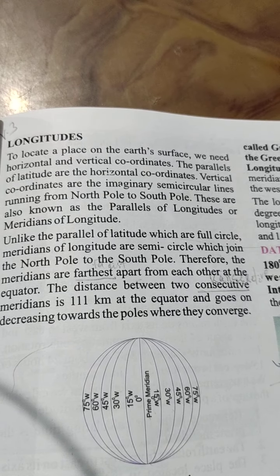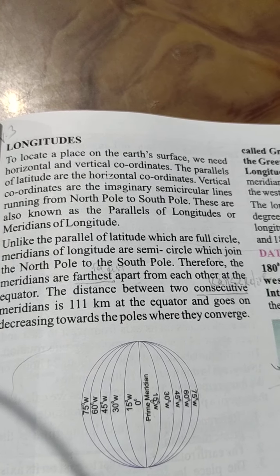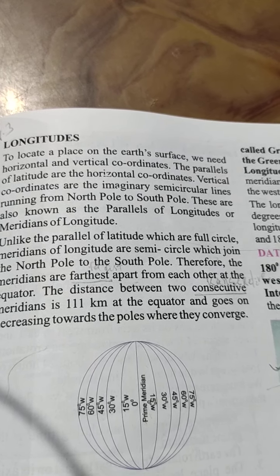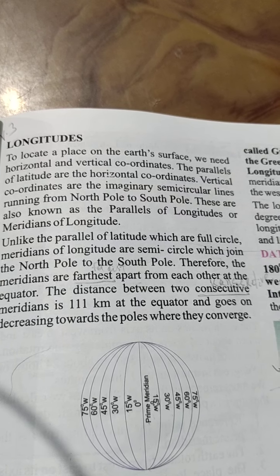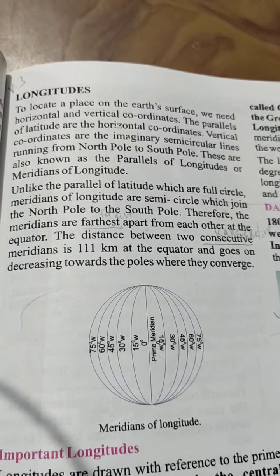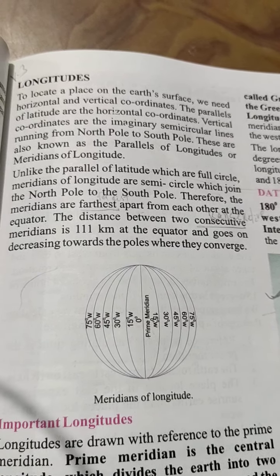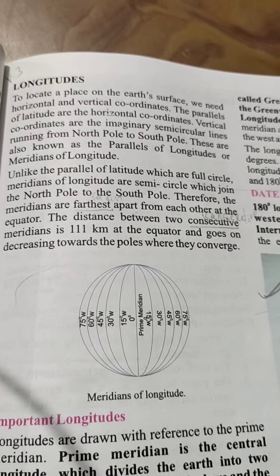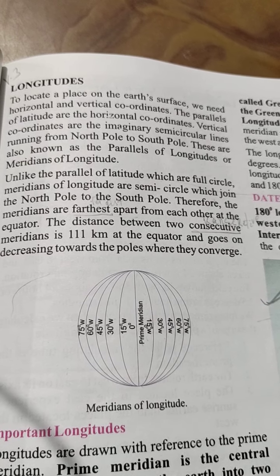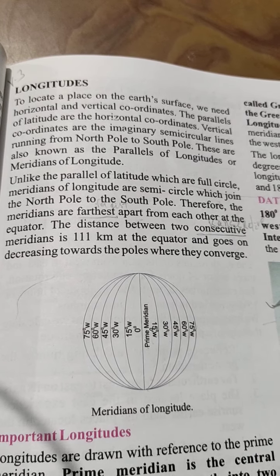Unlike the parallels of latitude which are full circles, meridians of longitude are semi-circles which join the North Pole to the South Pole. Therefore, the meridians are farthest apart from each other at the equator. The distance between two consecutive meridians is 111 km at the equator and goes on decreasing towards the poles where they converge.